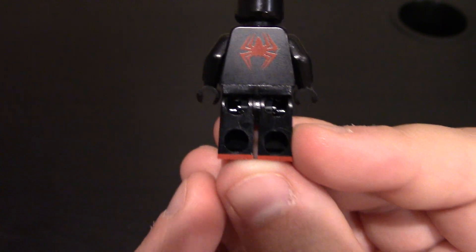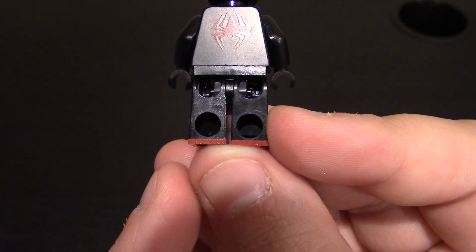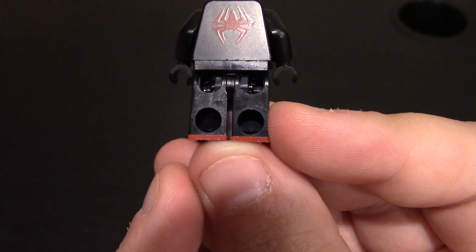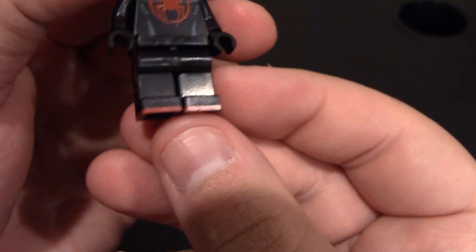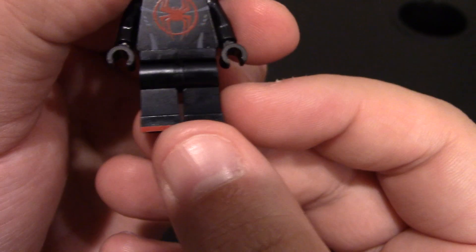Coming to the back of the legs. Nothing on the waist or legs, but there is printing on the lower feet. And you can see that red line does go all the way around on the minifigure for the bottom of his suit.